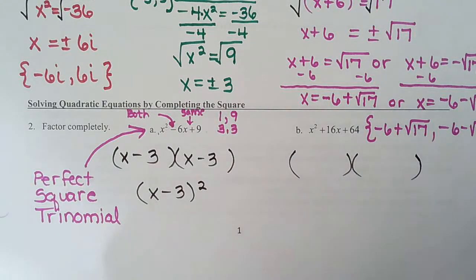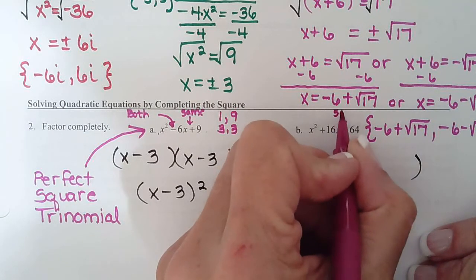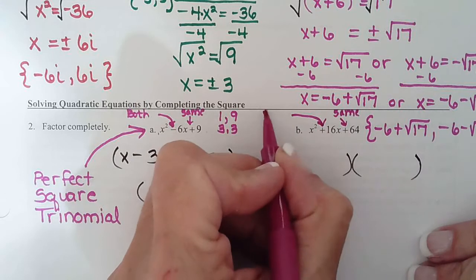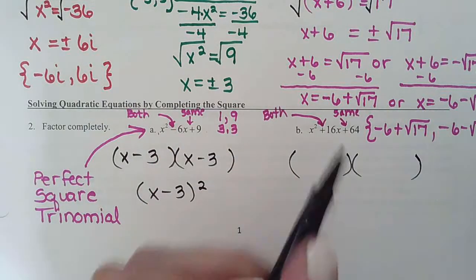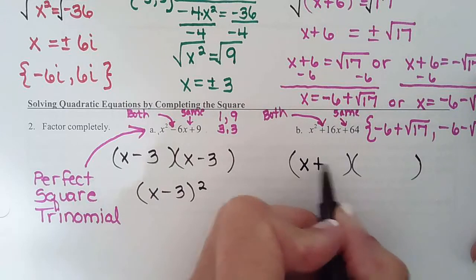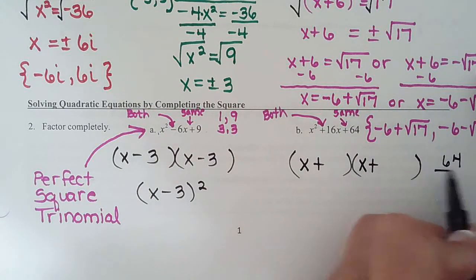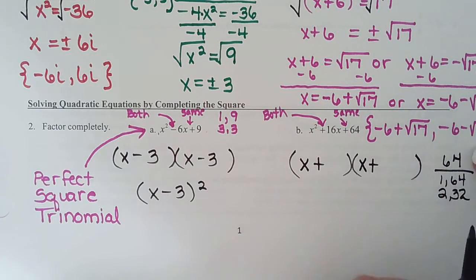Sometimes you can't tell by looking. I could tell that this was going to be. But you can't tell until you get to this step. If these match, then we know it's a perfect square trinomial. So let's see if this one is as well. Signs are the same again. This time they're both going to be positive.